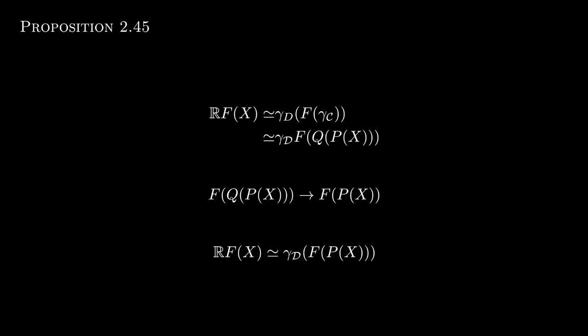Using what we said before, we can identify this isomorphism with RF of x. Also, we assumed F preserves fibrant objects, so F of P(x) is fibrant, and so γ_D acts on it by only cofibrant replacement, i.e., γ_D of F of P(x) is QF(Px), and we are done.